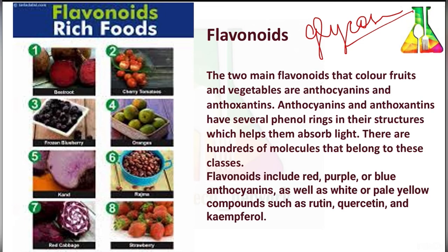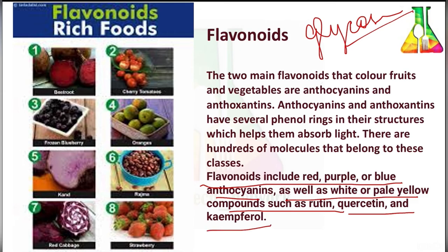Flavonoids may be the sole pigment in vegetables such as potato, cauliflower, and yellow-skinned onion. The most commonly found flavonoids in nature are the flavonols kaempferol. Flavonoids include red, purple, or blue anthocyanins as well as white or pale yellow compounds such as rutin, quercetin, and kaempferol. Flavonoids are generally more stable to heat and oxidation than anthocyanins.